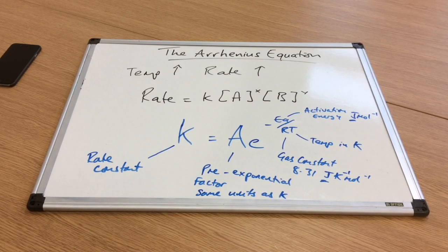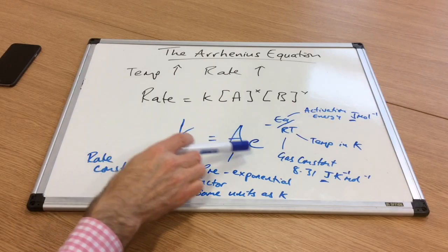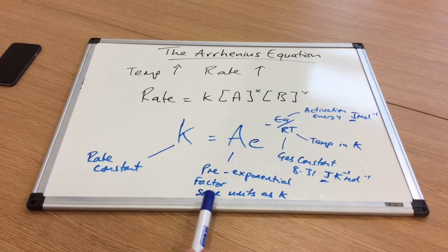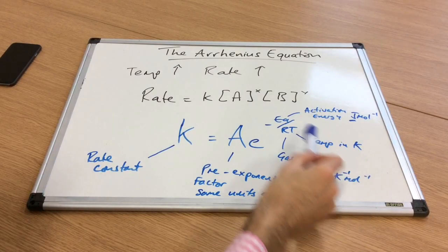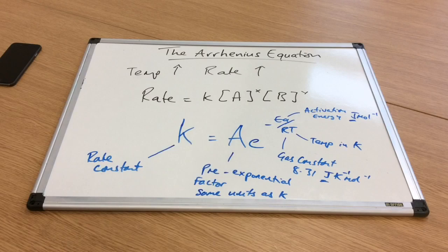Finally, this capital A is what we call the pre-exponential factor—it's basically just a constant, a number that goes before this exponential. It's got the same units as K. If we look at all the units going around in this term, they actually cancel out, and you're left with the units of K being the same as the units of the A term.